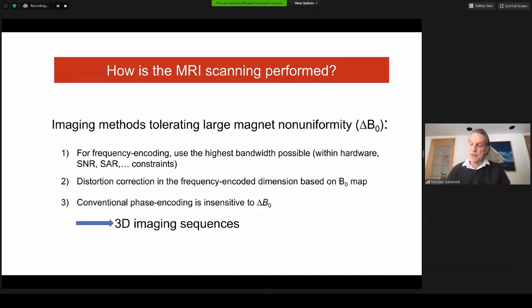Now let me briefly describe the methods employed to image with extremely non-uniform magnetic field. For frequency encoding, we will use the highest bandwidth possible within certain limits to minimize field-dependent image distortion. The remaining image distortion in the frequency-encoded dimension is corrected in post-processing using the known magnetic field profile. Spatial encoding in the other two dimensions of the 3D image is done with phase encoding, which is insensitive to magnetic field inhomogeneity.